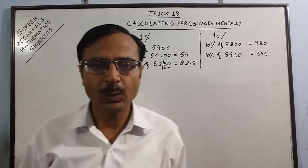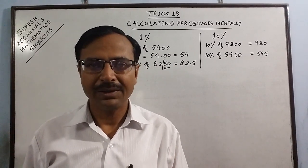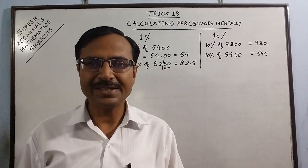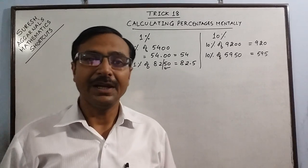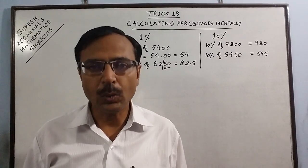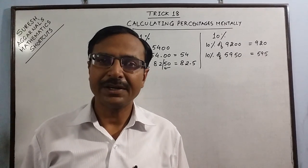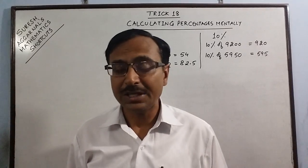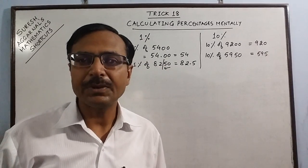Just revise it once more. Say we have 1% of 48, it is 0.48, because you put a decimal two places from the right. Then 10% of 120 is 12, 10% of 870 is 87 and so on. So these two concepts, if you remember mentally, then you can calculate any percentage.